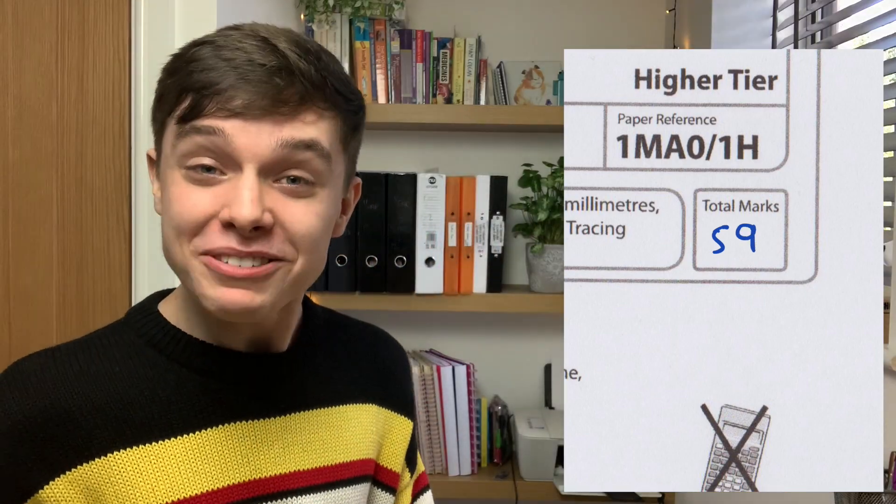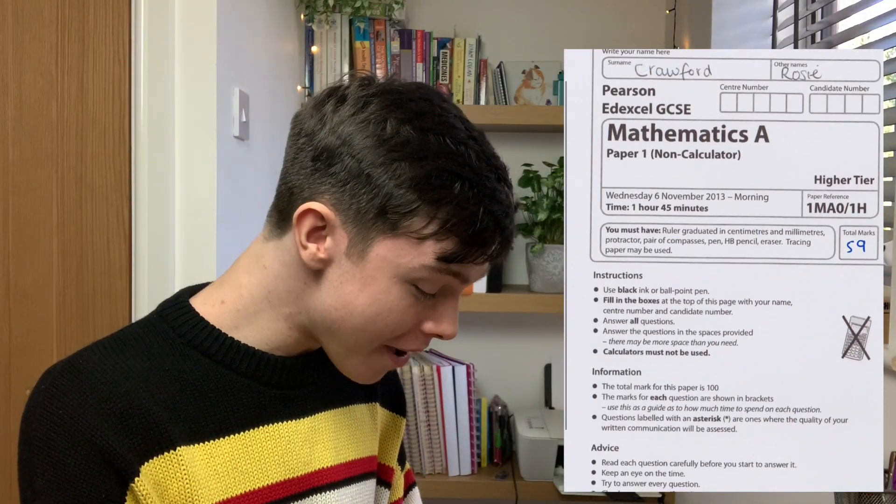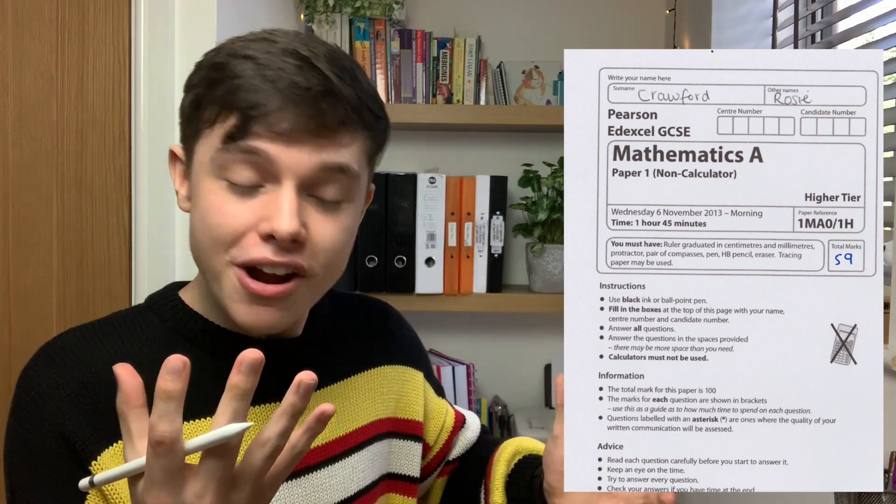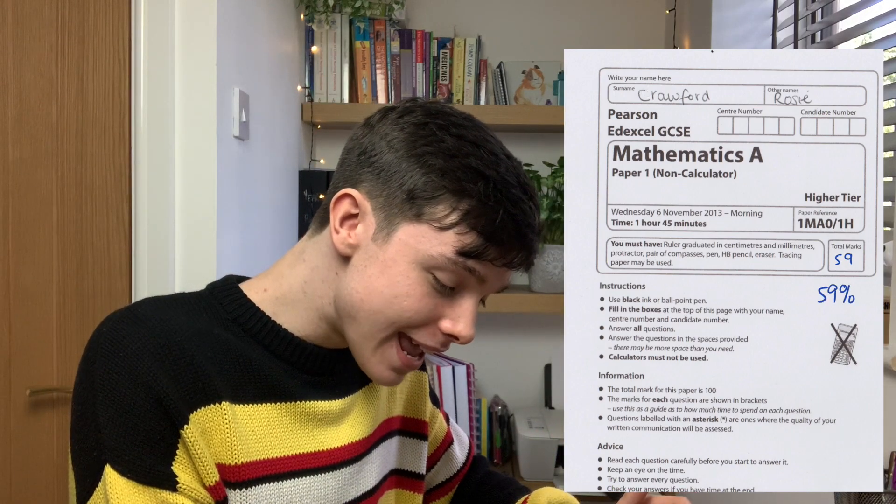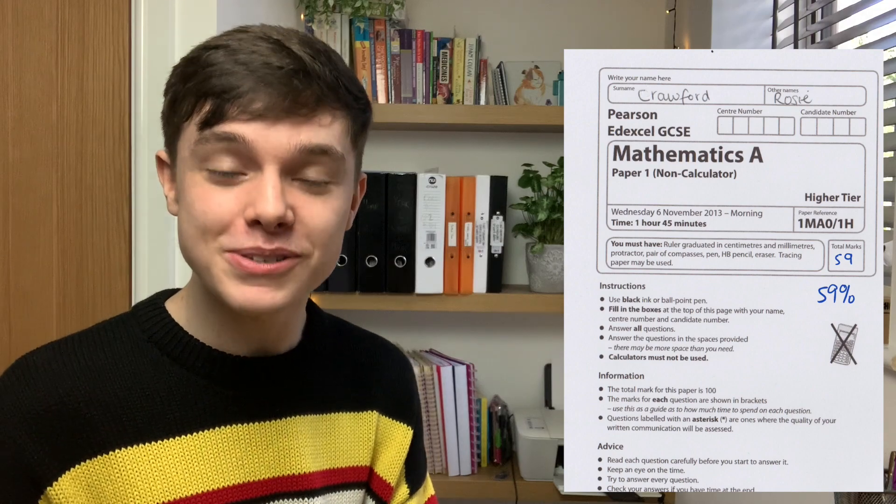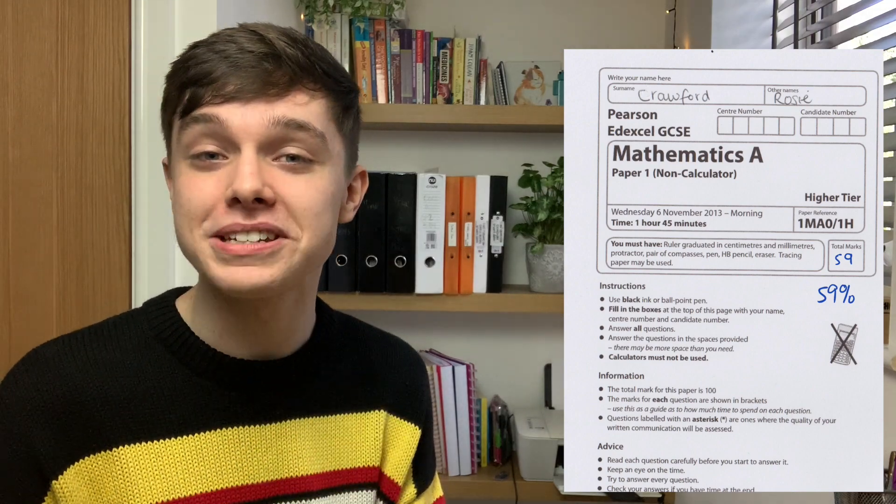59. That's really, really good. The paper is out of 100. So, just over half marks, it's 59%. That is a really, really good score to think Rosie's not done math since 2013. Now what I'm gonna do is I'm gonna have a look at the grade boundaries and see what grade that would be. I think it's going to be a B. It is! She passed. That's amazing. Well done, Rosie.